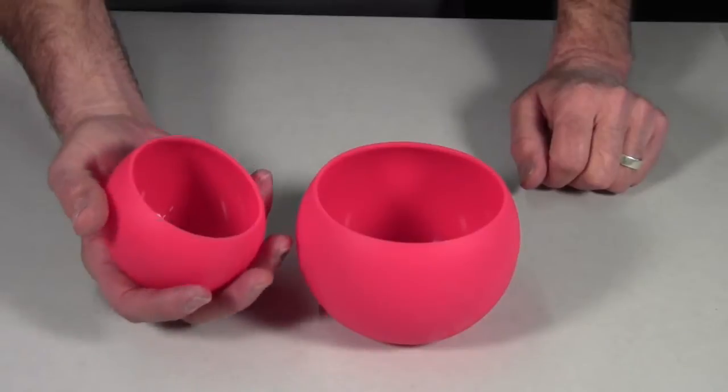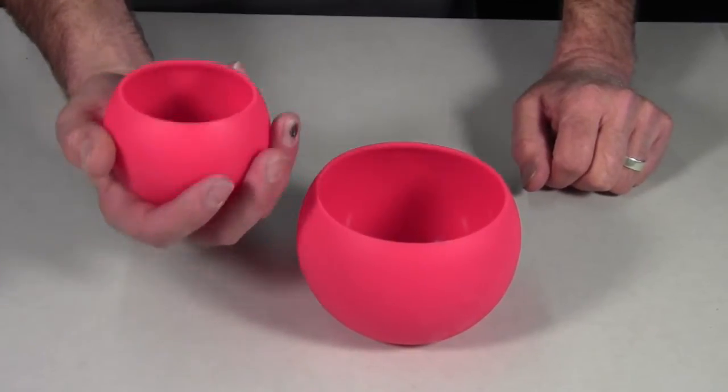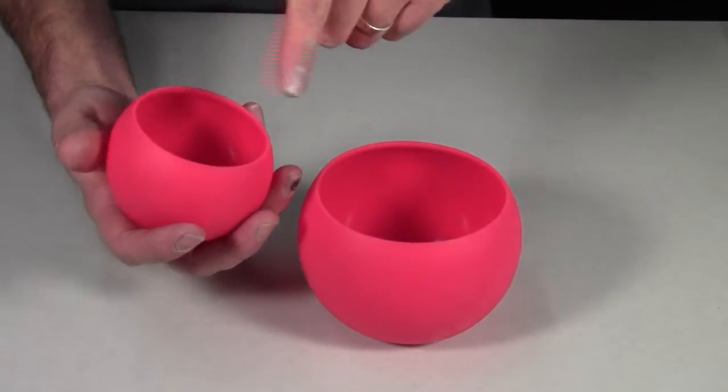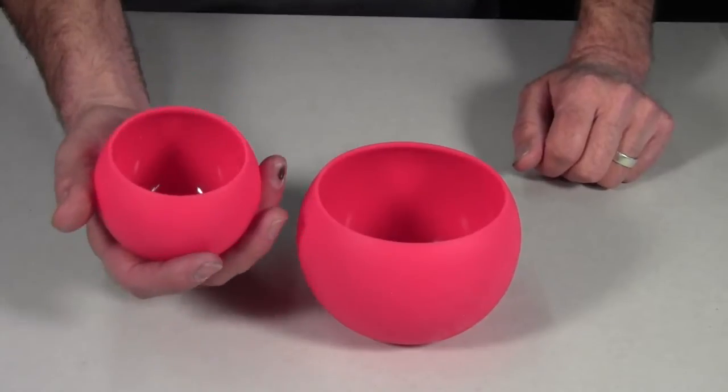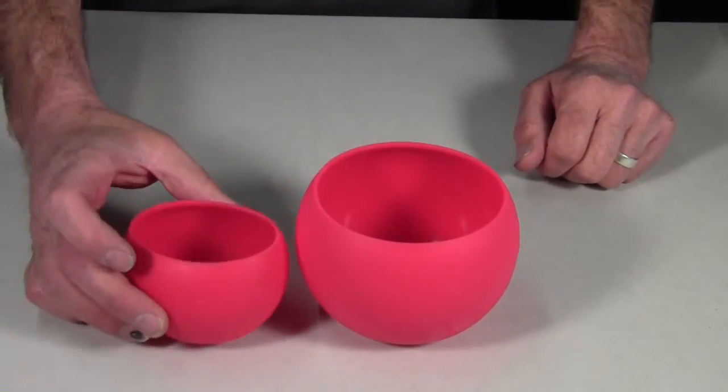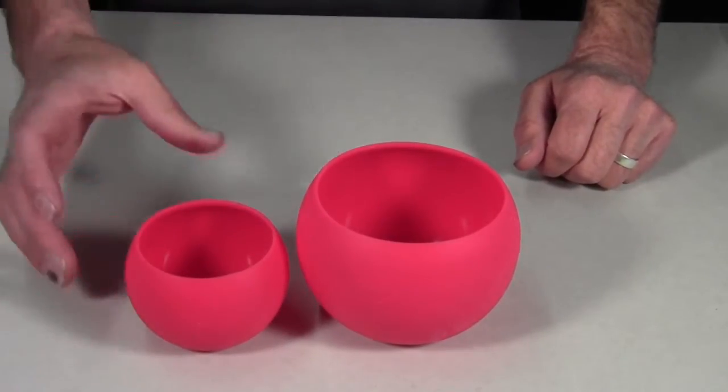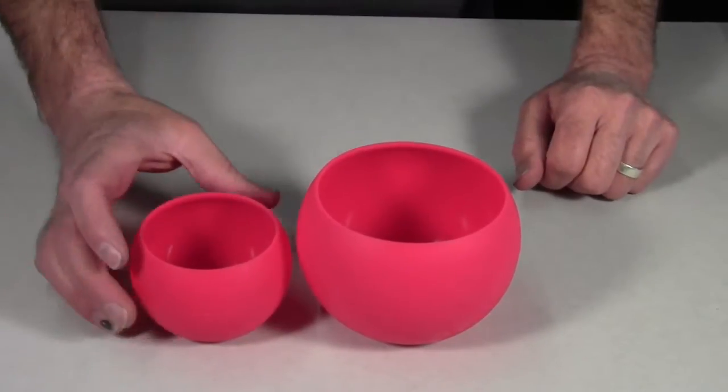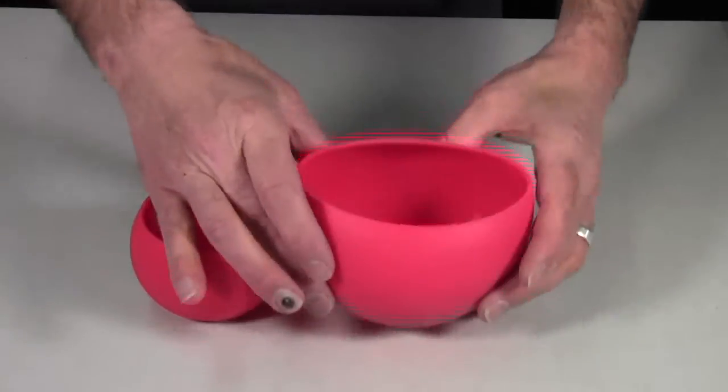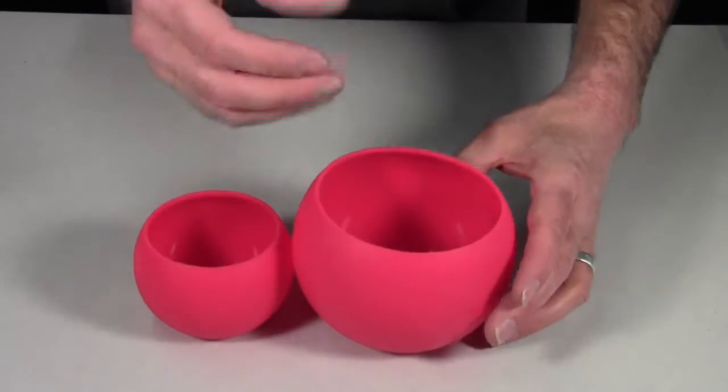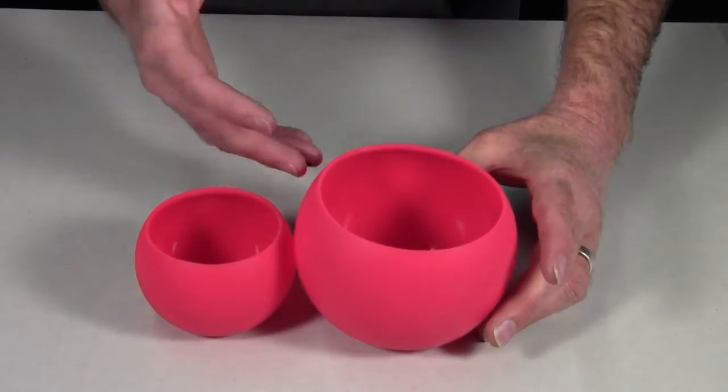And that insulative value that allows you to hold it in your hand also keeps its contents hotter longer than if it were in a stainless steel cup or a titanium cup. That heat is going to dissipate out much faster. And so it's the same thing with the bowl. It just keeps your food nice and warm for a long time.